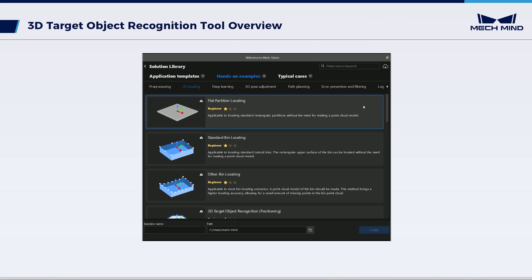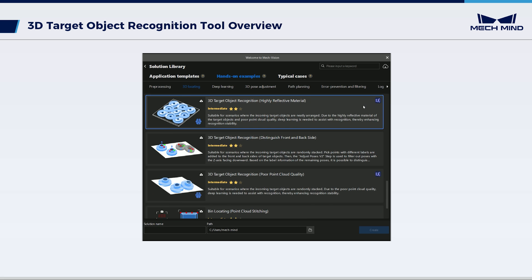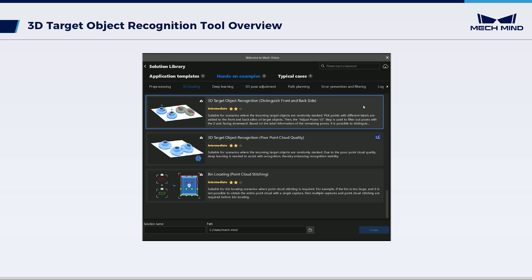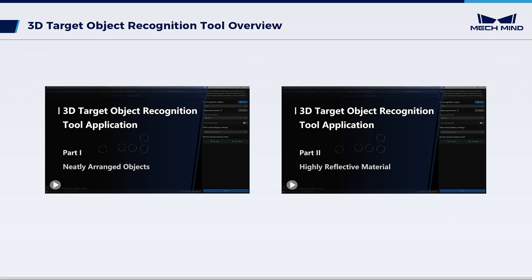In hands-on examples of MechVision's solution library, demonstration projects illustrate the usage of the tool across various scenarios. Through the hands-on examples, the following videos will cover the vision recognition strategies and parameter configuration for different scenarios.